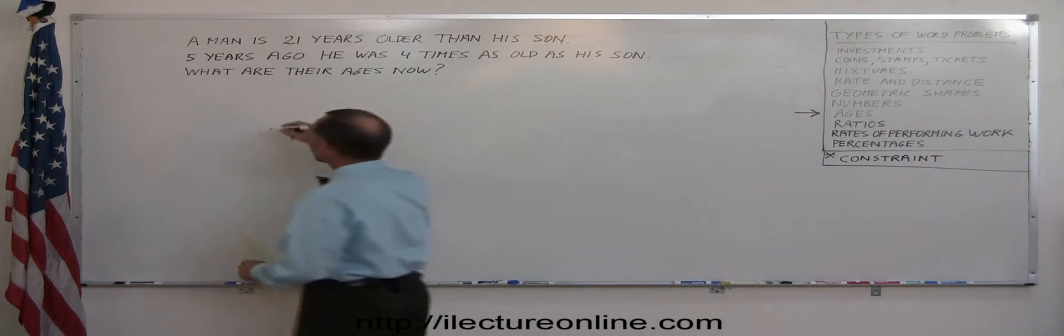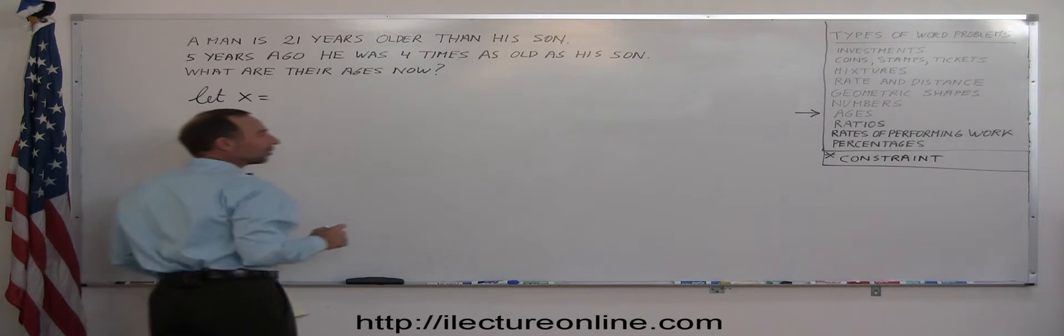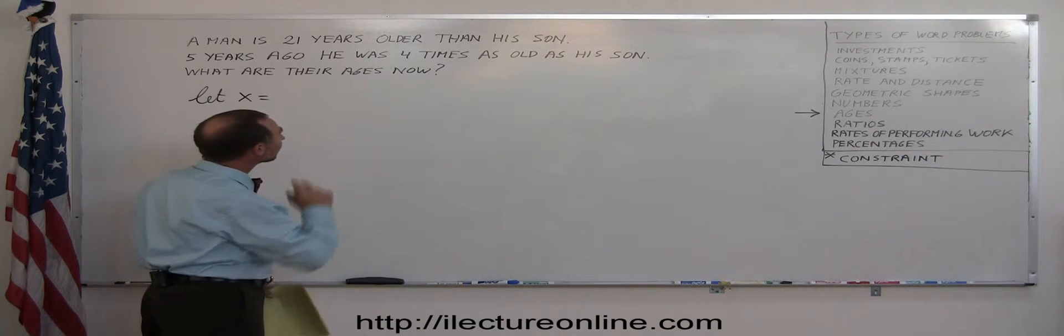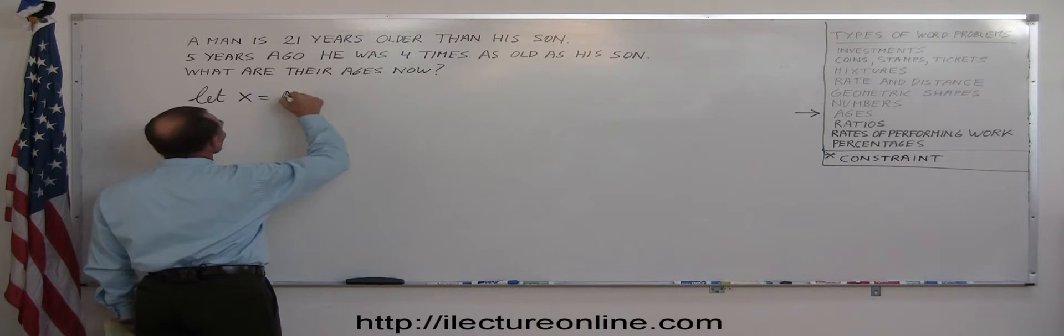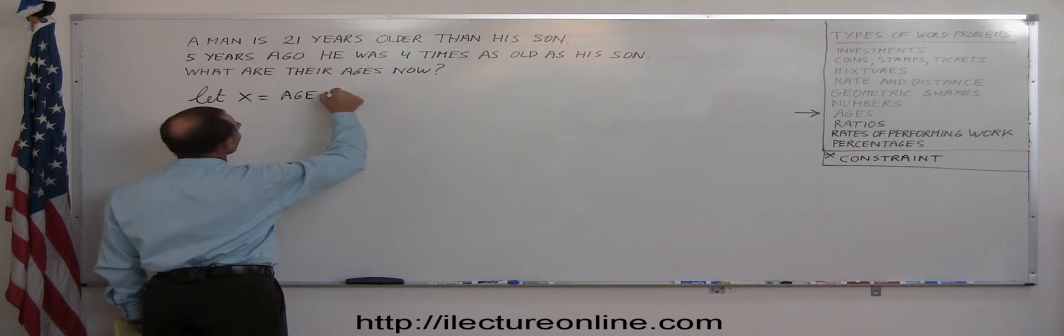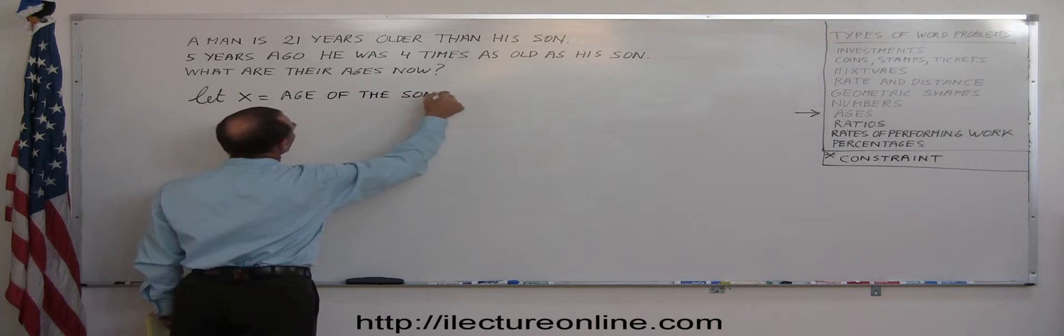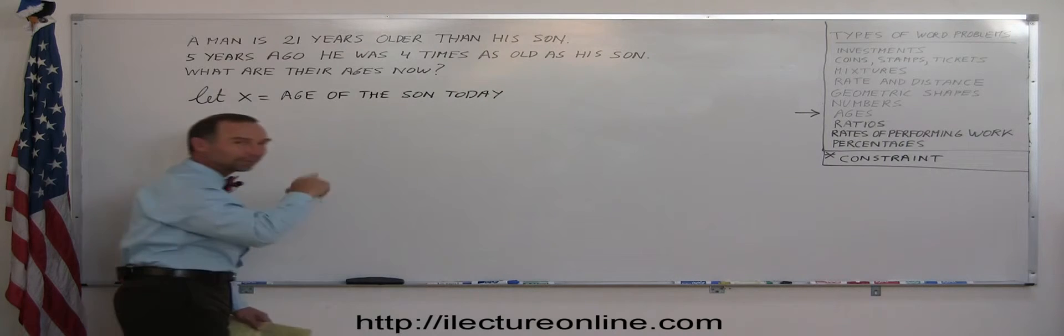Again, just like most problems, you're going to let x equal something. And in this case, we're going to let x equal the youngest of the people involved. In this case, there's two people, a father and a son. And so let x equal the age of the son today. Be very specific that it wasn't in the future in the past, but today.